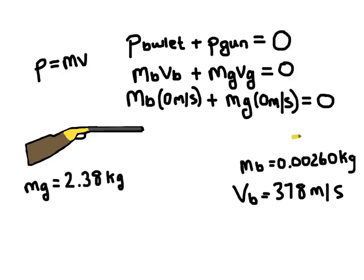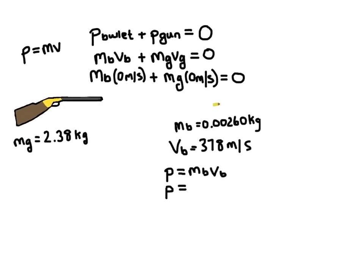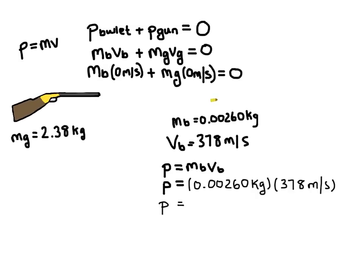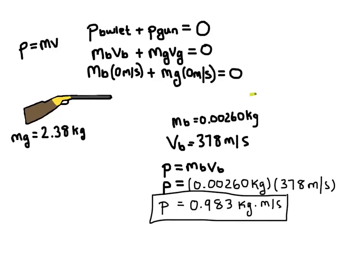We can calculate the momentum of the bullet using the equation P equals MV. So let's go ahead and plug in our numbers here. And so we have mass times velocity and we end up with momentum of 0.983 kilograms times meters per second. So that is the momentum of the bullet. Again, this is as the bullet here is flying out of the gun.